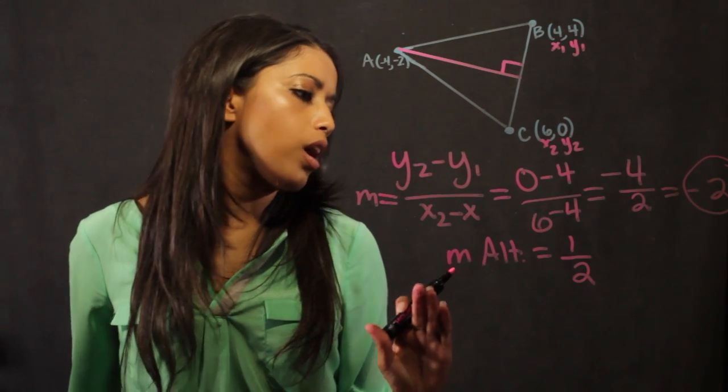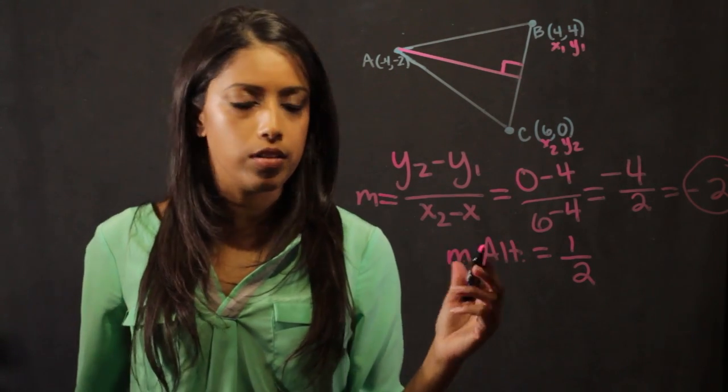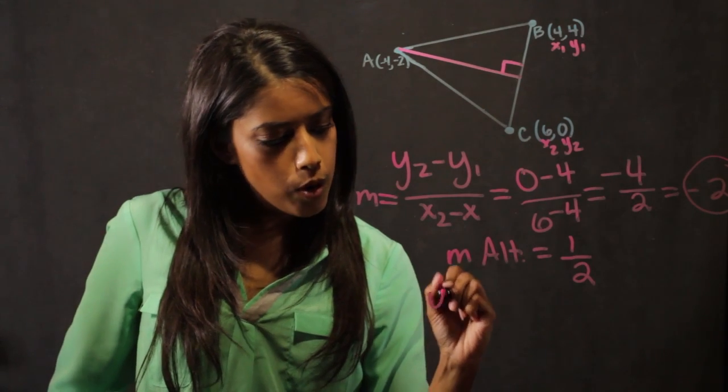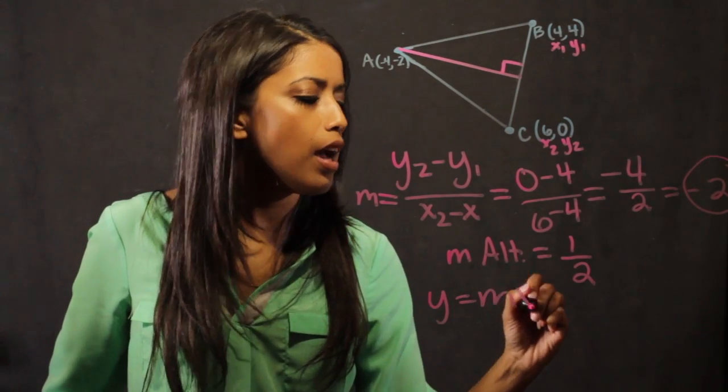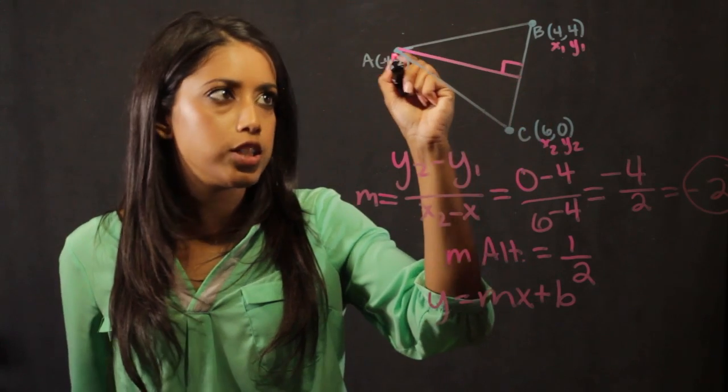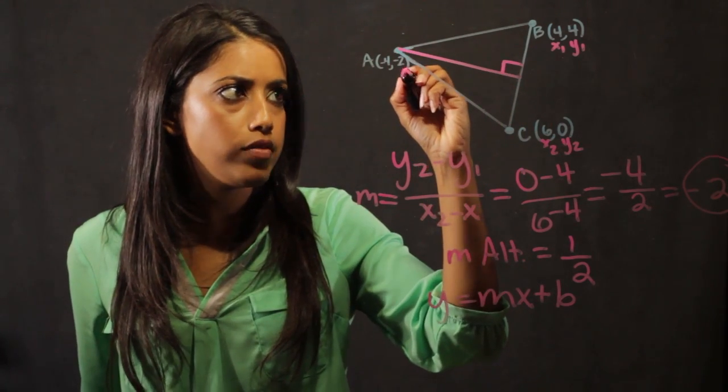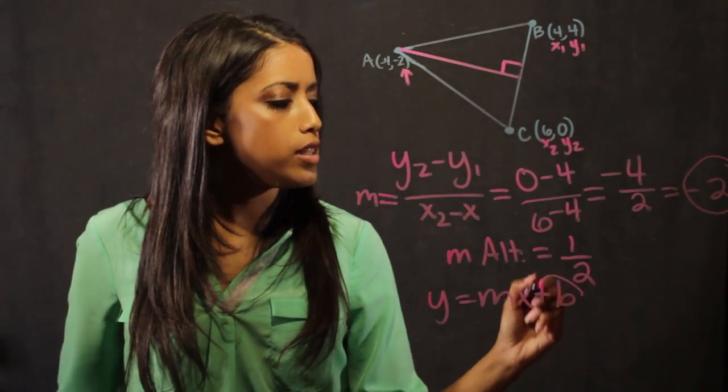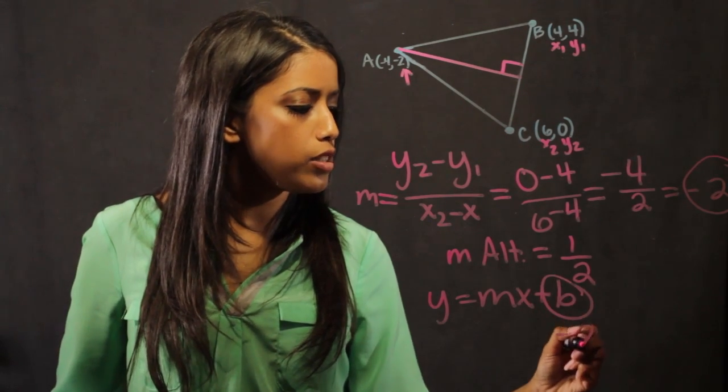Now that I have the slope of the altitude, I put it into the form y equals mx plus b. Because this altitude runs through this point, I know I have a y-intercept of negative 2, which is b, so I put the minus 2 there.